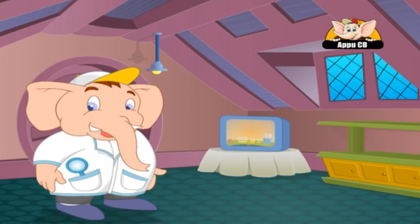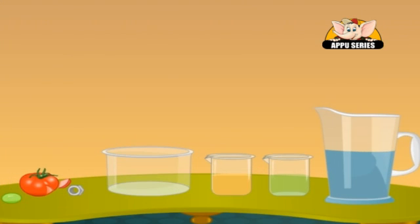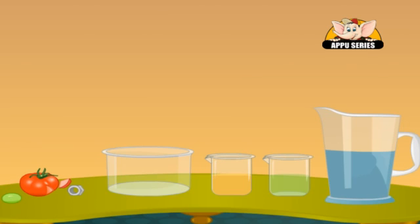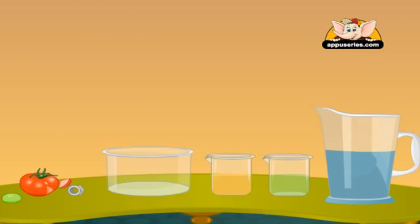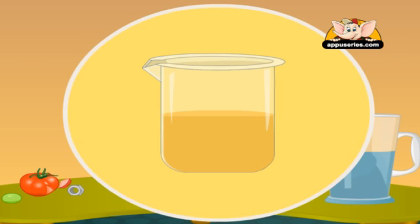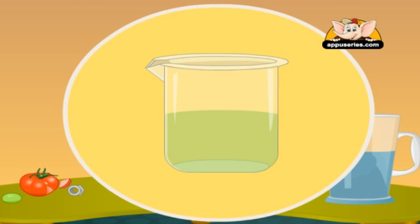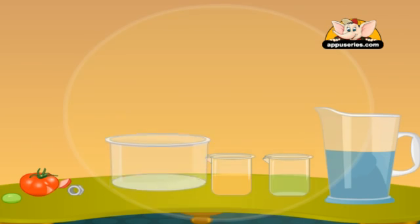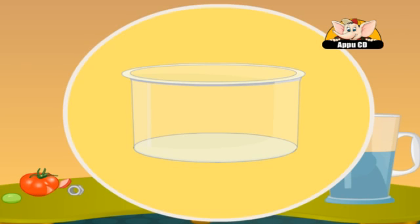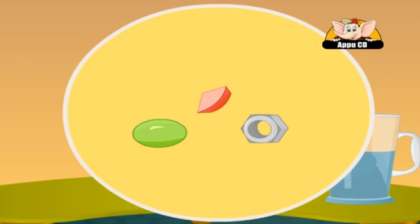An object or liquid will float only in a liquid more dense than itself. You will need colored water, sugar syrup, vegetable oil, a large container, and a selection of objects to float. We will use a nut, a grape, and a slice of tomato.